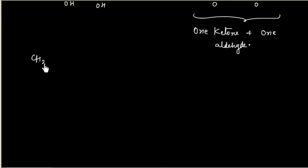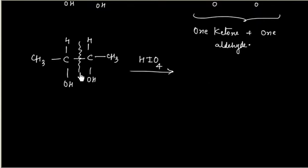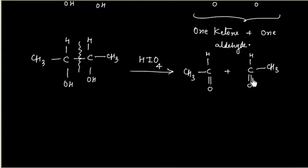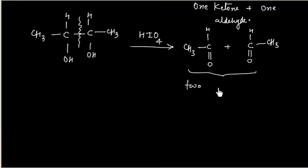Now if we have a simpler reactant where both carbons bear only hydrogens, and this compound is treated with periodic acid, we break that bond, and in this case we are getting only aldehydes — 2 aldehydes. So the product can be aldehyde or ketone.